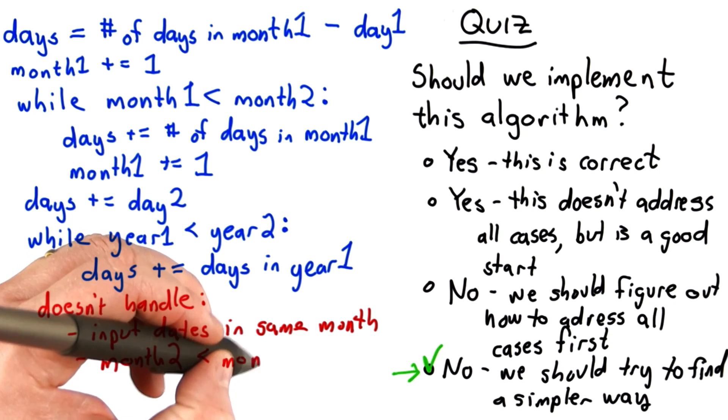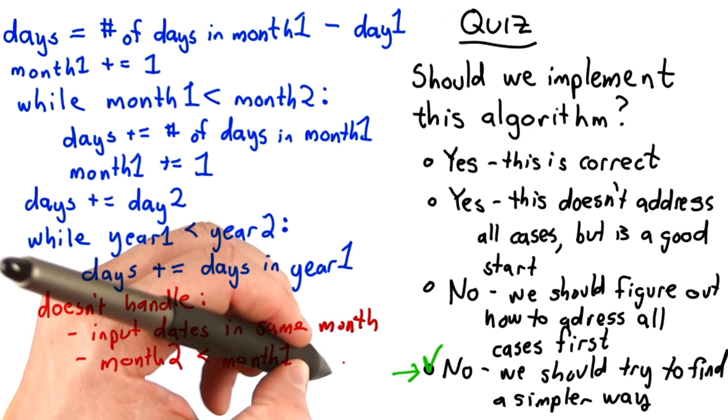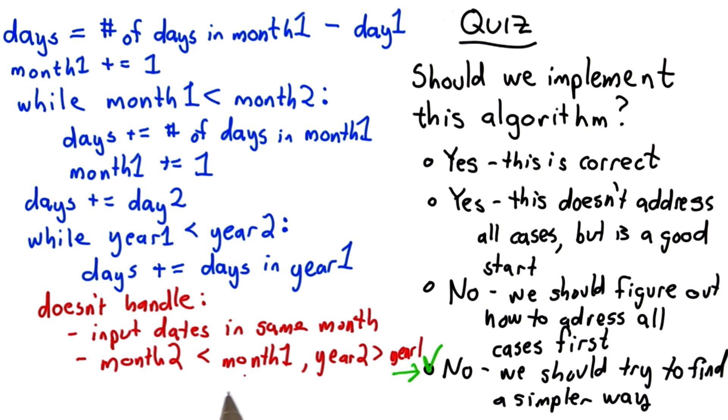There are other cases it doesn't handle. It doesn't handle the case where month 2 is before month 1. And this could happen if the years are different. It would still be the case that the second date is after the first date, even though the second month is before the first month. And this won't handle that correctly.